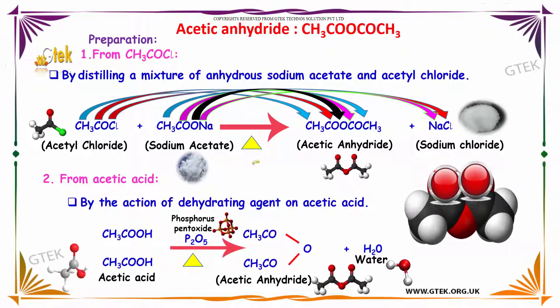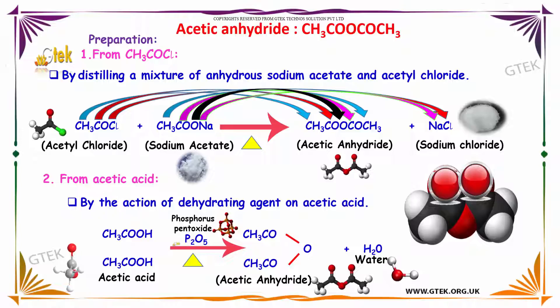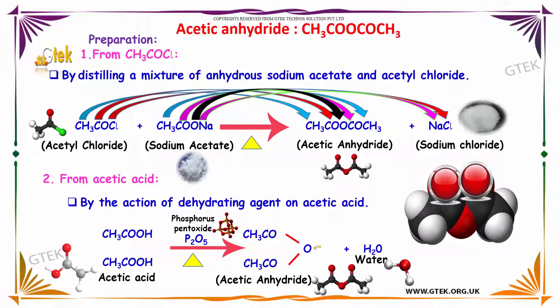From acetic acid, it is prepared by the action of a dehydrating agent. In the presence of phosphorus pentoxide on heating, we obtain acetic anhydride along with water.